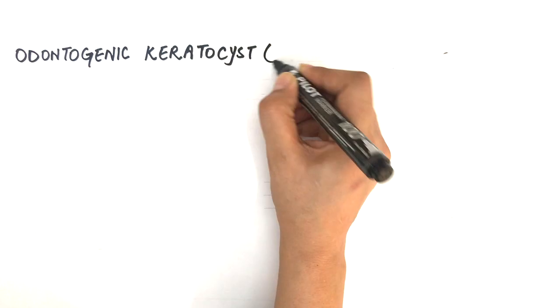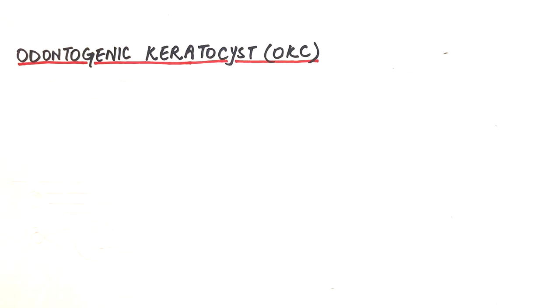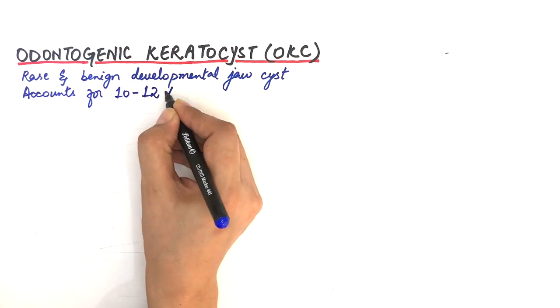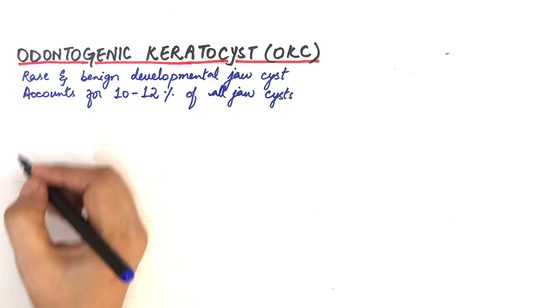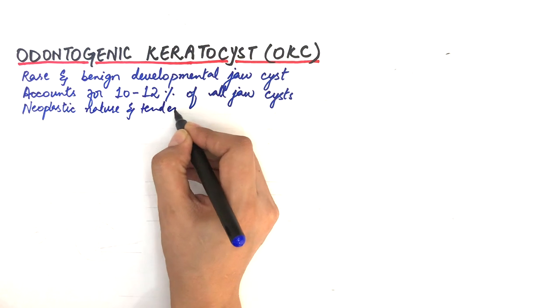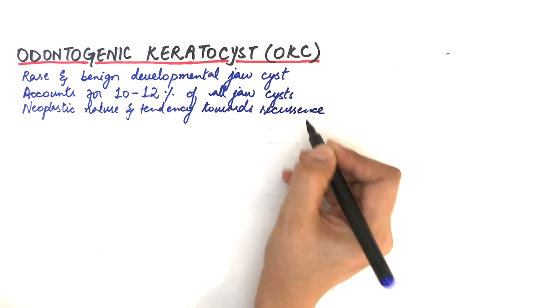Odontogenic keratocyst, denoted as OKC, is a rare and benign cystic lesion of the jaws accounting for 10 to 12 percent of all jaw cysts. The cyst has a neoplastic nature and a tendency towards recurrence.